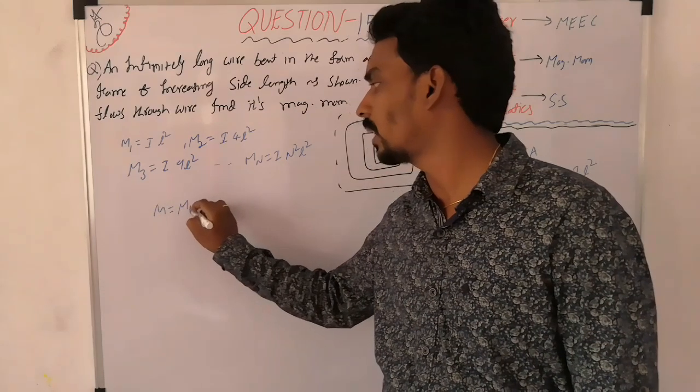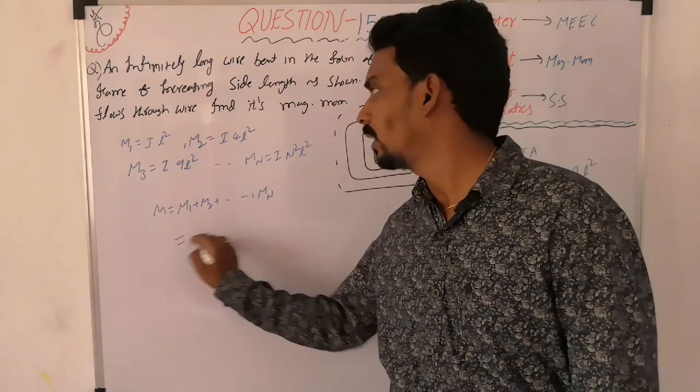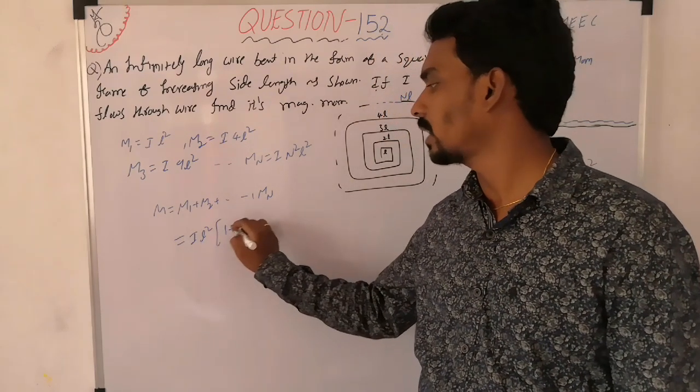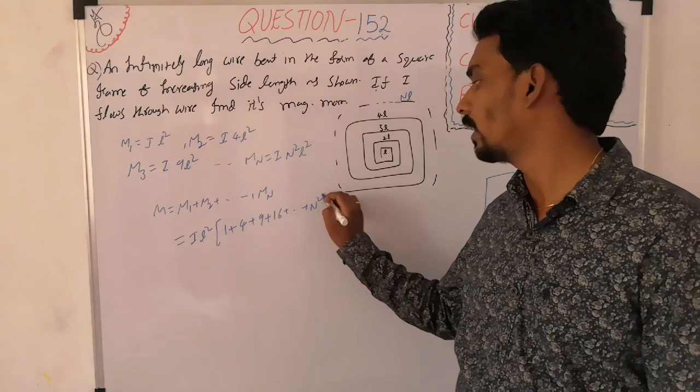So what is the total magnetic moment? M1 plus M2 plus so on MN equals IL square times (1 plus 4 plus 9 plus 16 plus so on N square), taking IL square common.